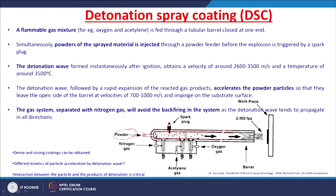A detonation wave followed by the rapid expansion of reacted gas products accelerates the powder particles so that they leave the open side of the barrel at velocities of around 700 to 1,000 meters per second and then impinge onto the substrate to form a coating. Nitrogen gas is used to separate the gas system and avoid backfiring, since the detonation wave tends to propagate in all directions.